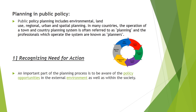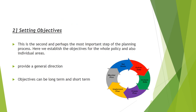The second and perhaps the most important step of the planning process is setting objectives. Here we establish objectives for the whole policy as well as for individual areas. Policy objectives provide a general direction, and the objectives of the policy will be more planned and detailed. Objectives can be long-term and short-term, and they indicate the end result the policymaker wishes to achieve. These objectives flow down from the policymaker and guide workers in the correct direction.